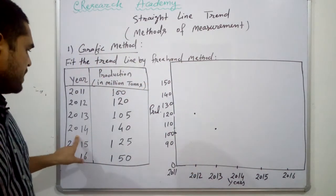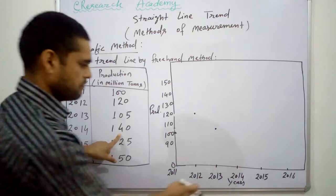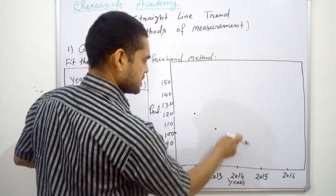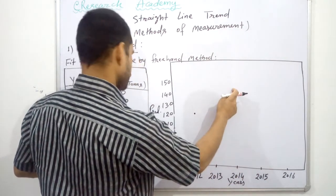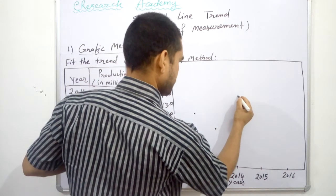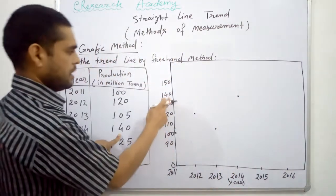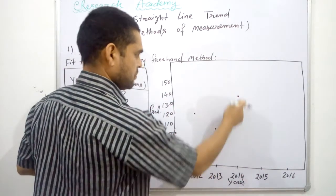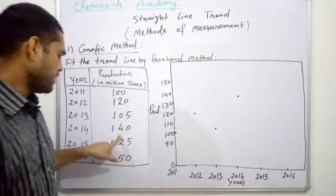Next, 2014, this is 140. For 2014, just above 2014 and in front of 140, we will have to mark a point here, that is this one.